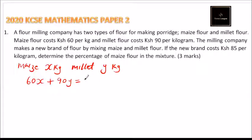This should be equal to the cost of the new type of flour with the number of kg. So that will contain X number of kg of maize and Y number of kg of millet.